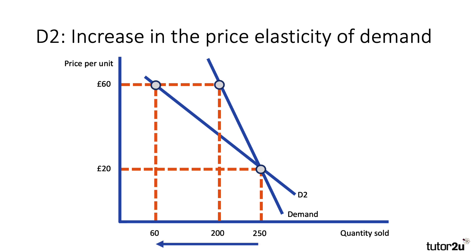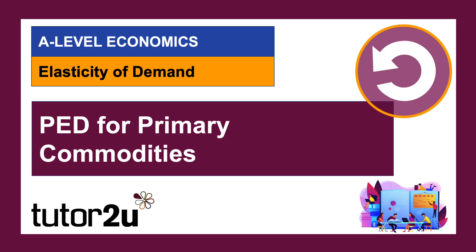At that higher price of 60, demand falls away. So over time, if you can find alternatives and the commodity becomes less of a necessity, then you'd expect the coefficient of price elasticity of demand to go up. It doesn't necessarily mean it's going to become price elastic, because of the nature of many primary commodities.